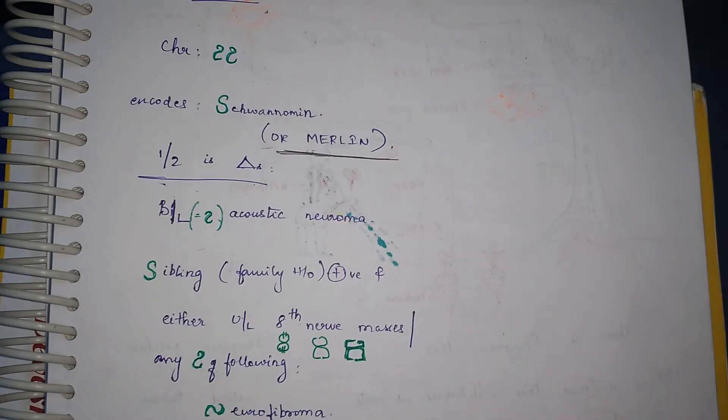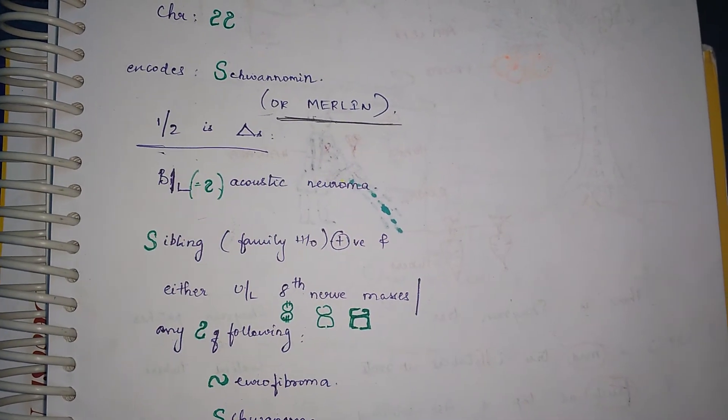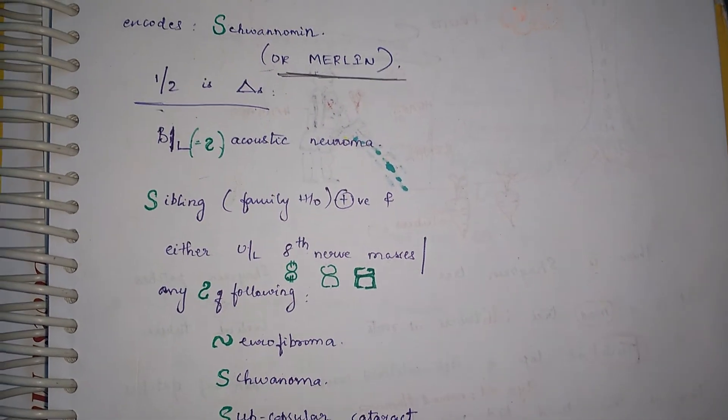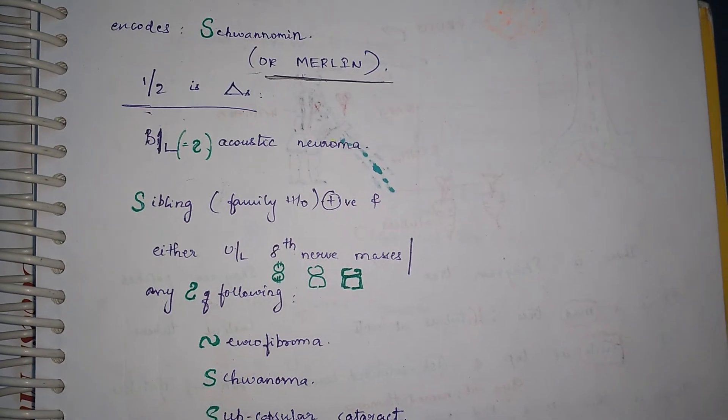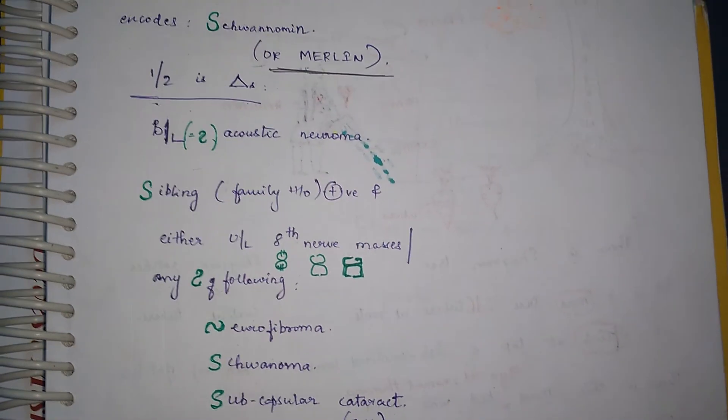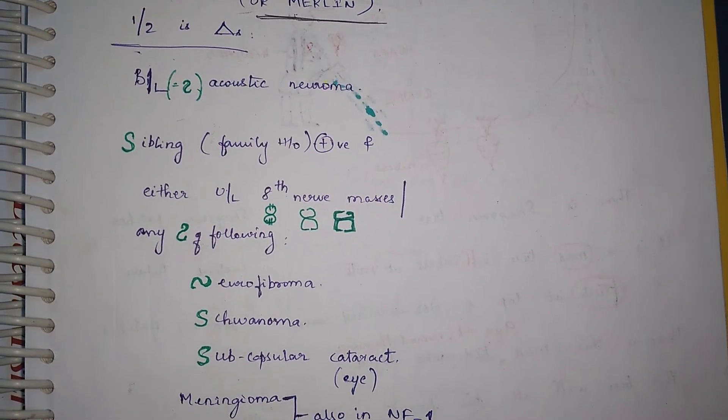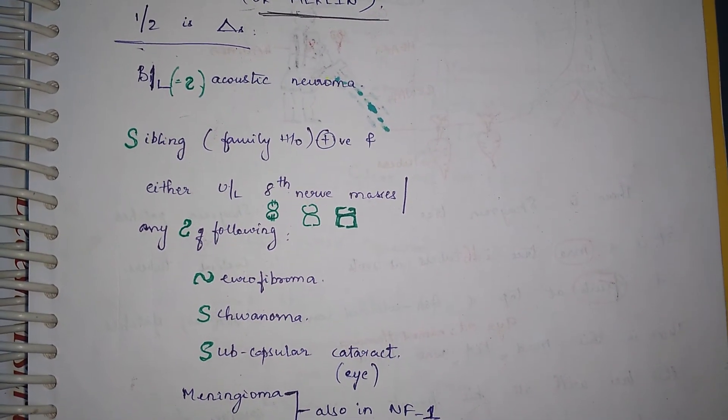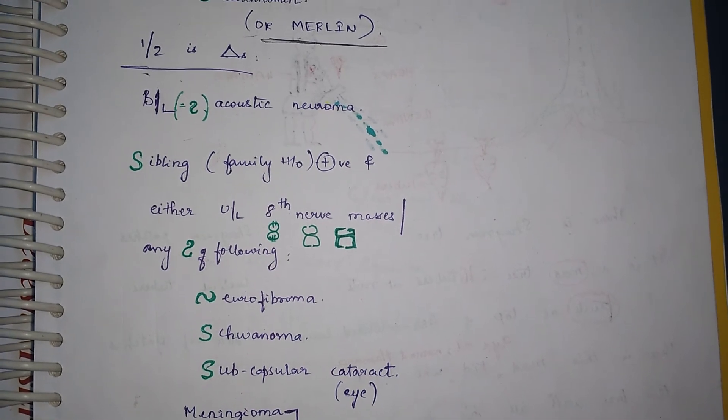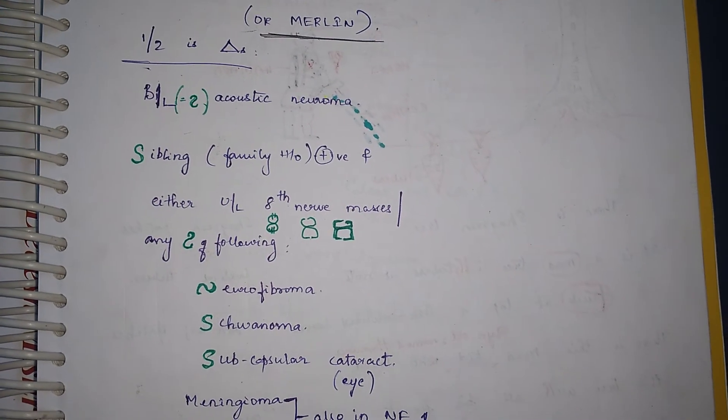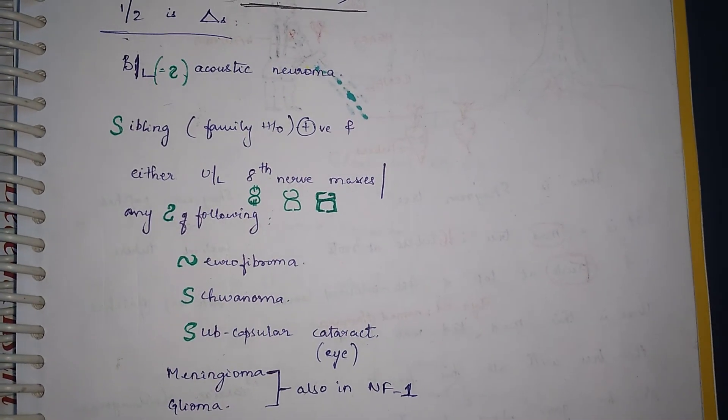And the criteria is 1 out of 2 is diagnostic: that is bilateral acoustic neuroma, sibling family history positive, and either unilateral 8th nerve deafness. Eight, as you can see, if you put two 2s like 2 and S, if you join it, it resembles 8. And any 2 of the following...